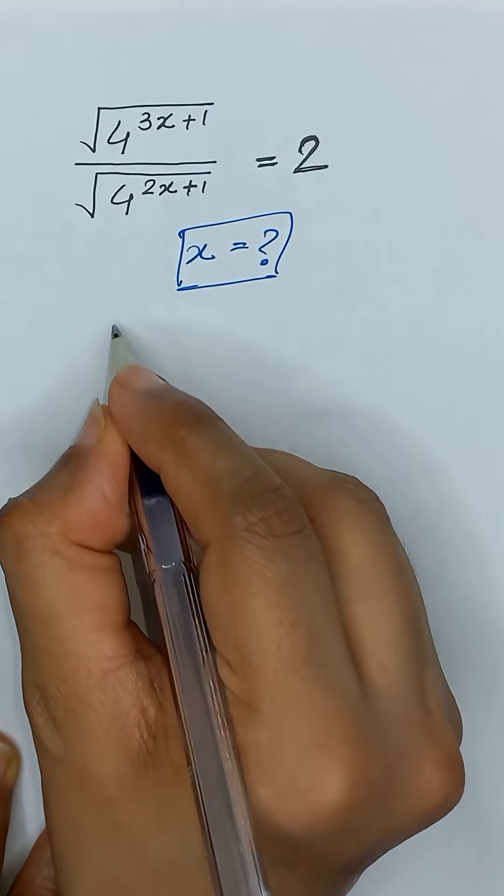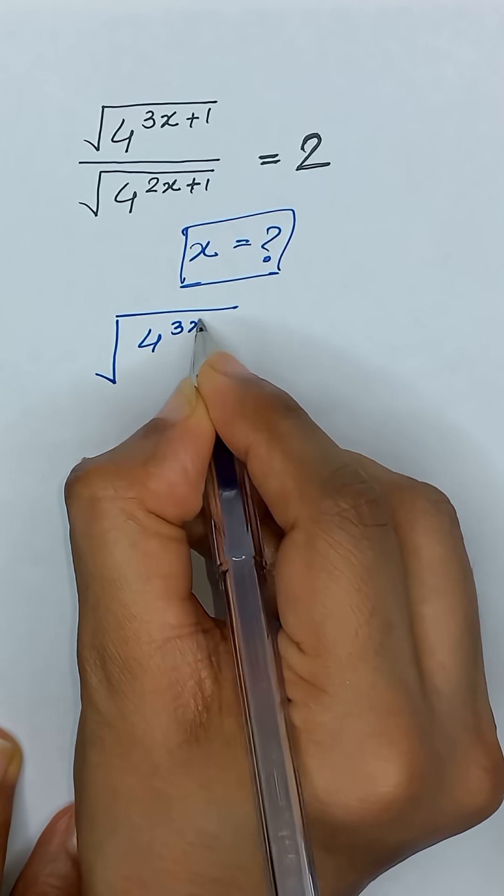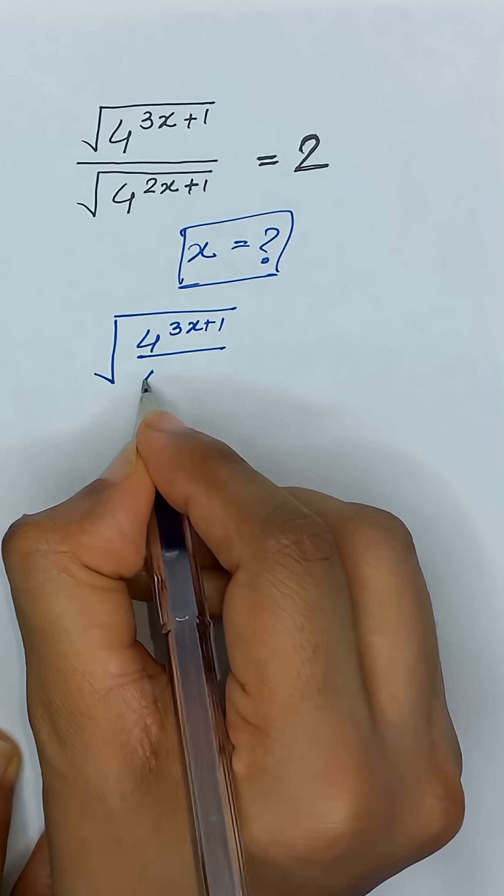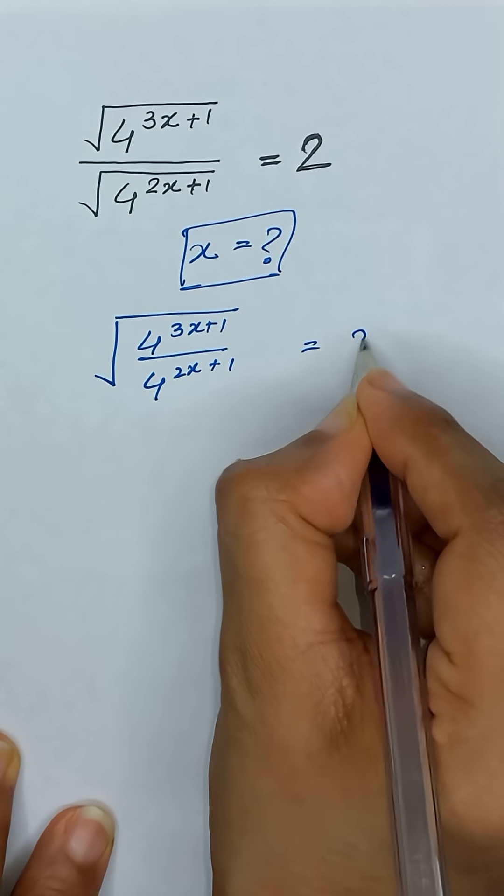Okay, first of all, we can also write it as 4 to the power 3x plus 1 divided by 4 to the power 2x plus 1 and it is equal to 2.